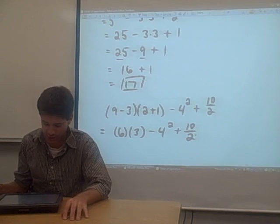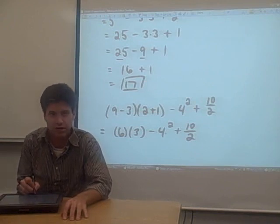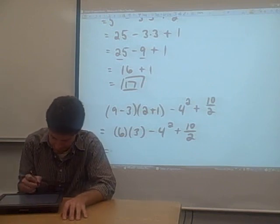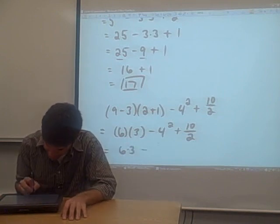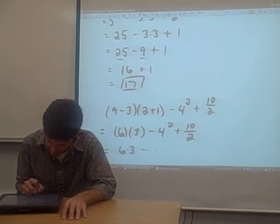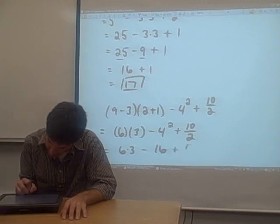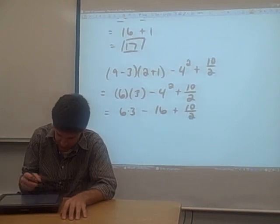Then we need to carry out all of our exponents. In this case, we have one exponent. It's a square on four. So we have six times three. I'm going to get rid of the parentheses there. Minus, let's see, four squared is 16, right? Okay, so we got rid of all of our exponents and all of our parentheses.